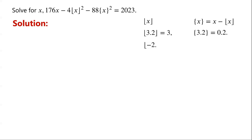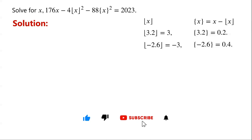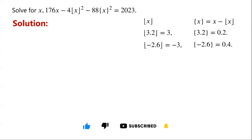Similarly, the floor of negative 2.6 is negative 3. The fractional part of negative 2.6 is 0.4, as negative 2.6 minus negative 3 is 0.4. The floor of 2 is 2, as 2 is the greatest integer less than or equal to 2, so the fractional part of 2 is 0.